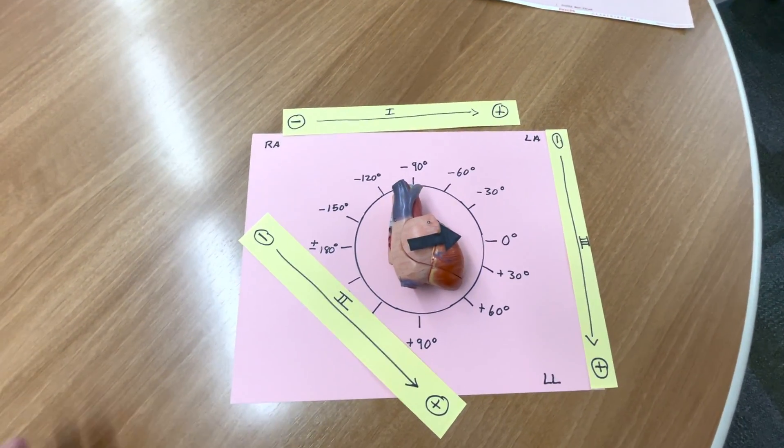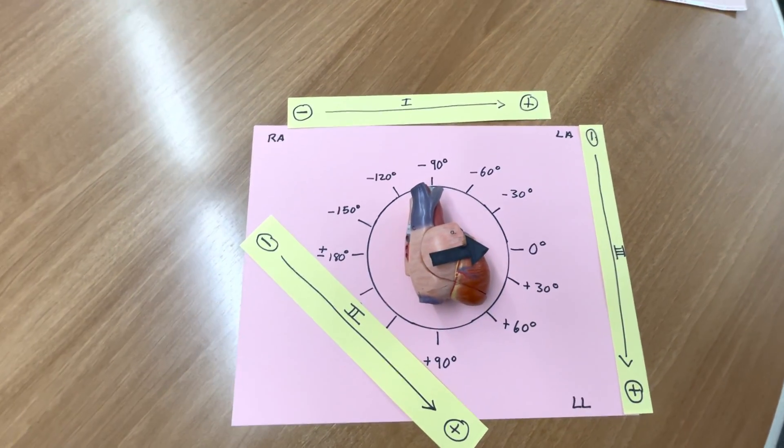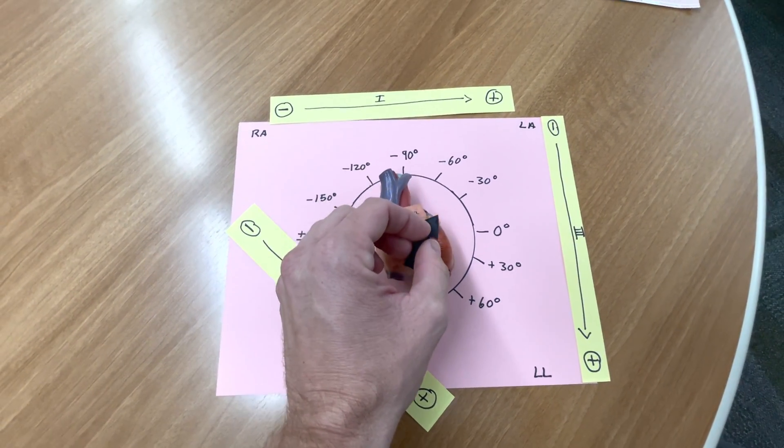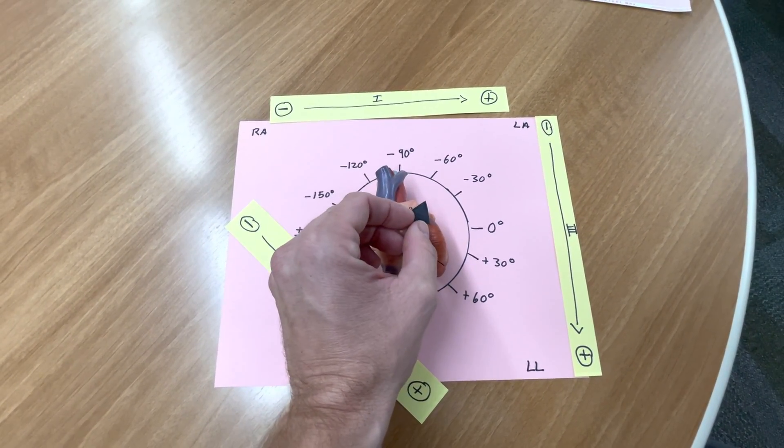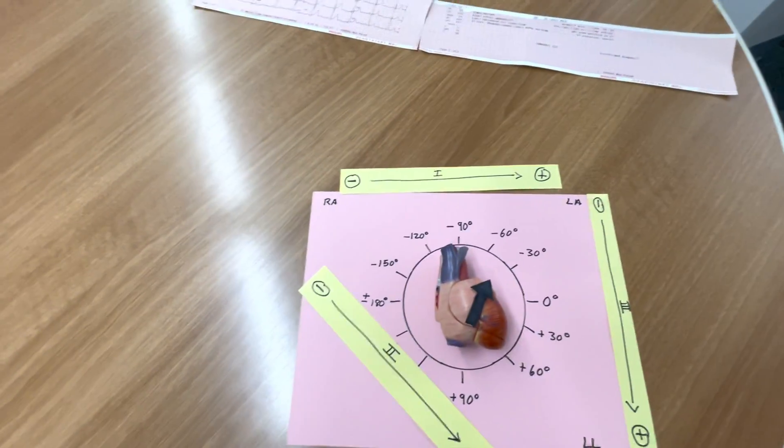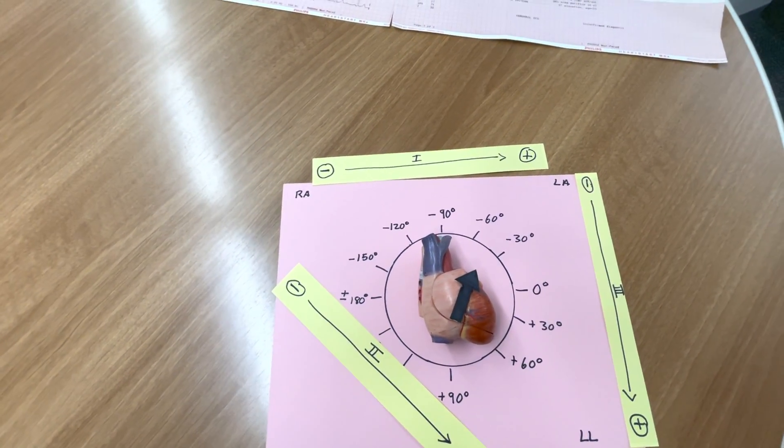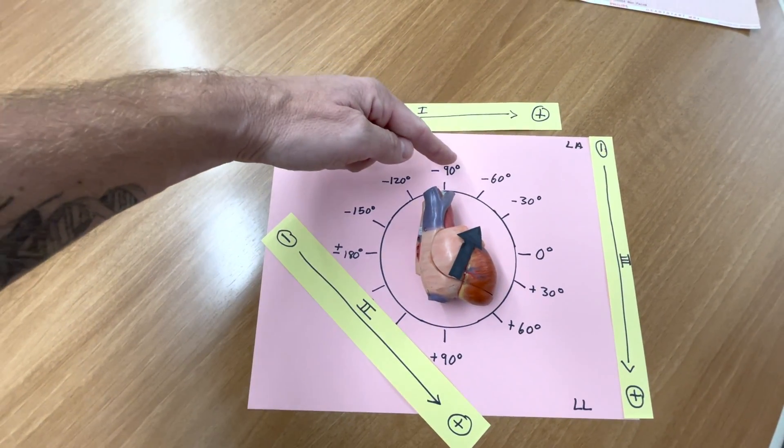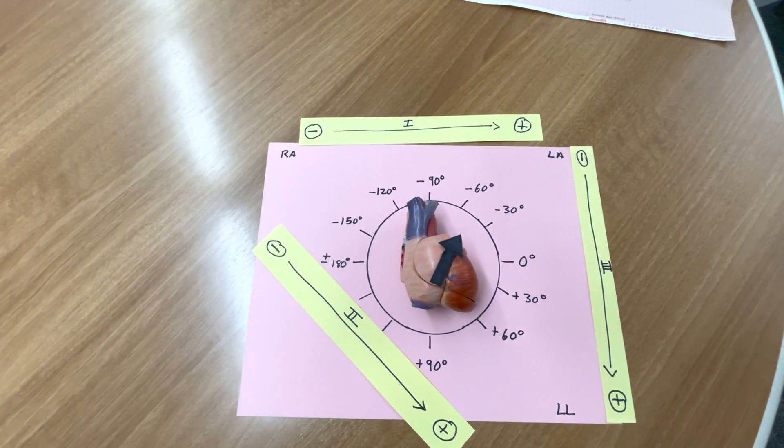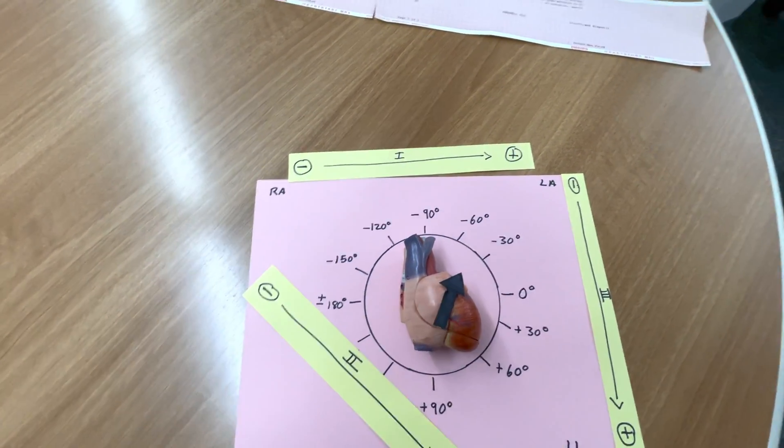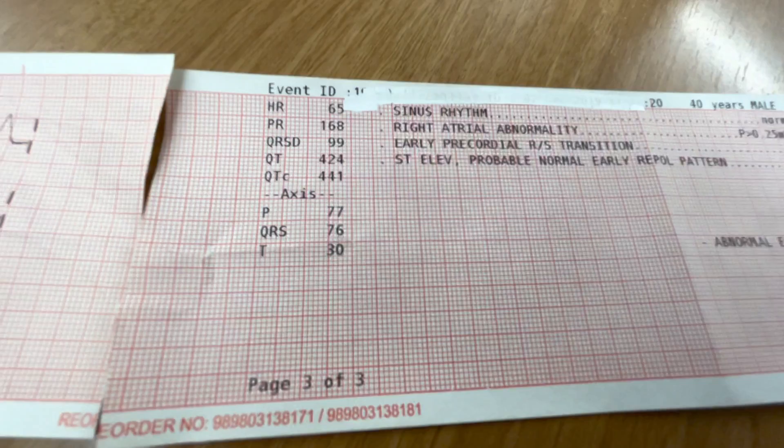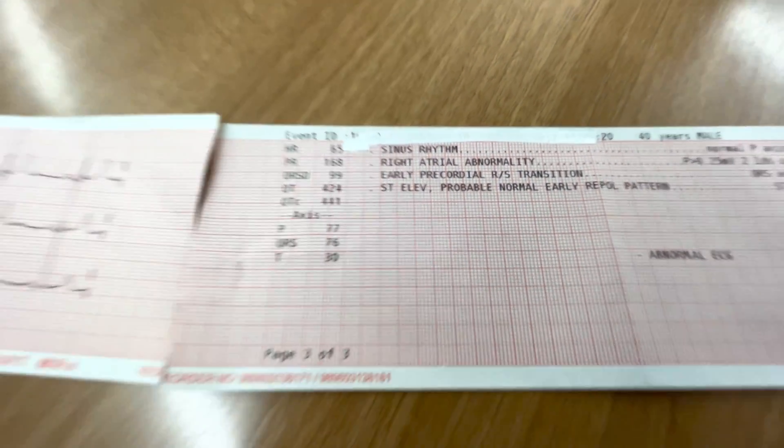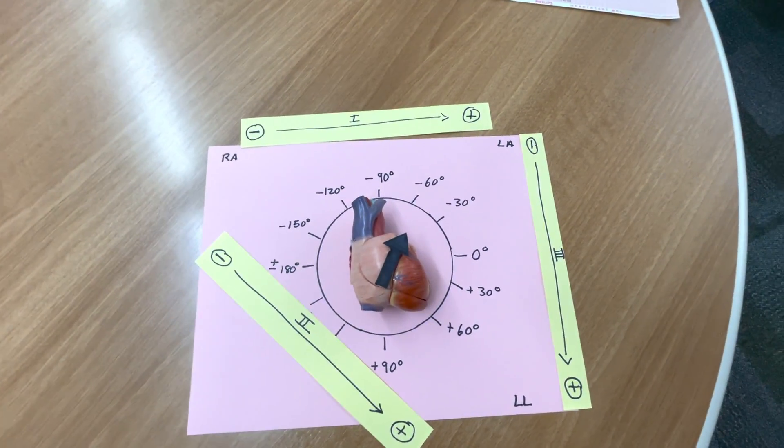From negative 30 to plus 90 is generally considered normal. 0 to negative 30 is physiological left axis deviation. Now, when that goes above and you have something that looks like this from negative 30 to negative 90 degrees here, that is what we call pathological left axis deviation. So, you go to your 12 lead, you look, and if that QRS or that Q axis is between negative 30 and negative 90 degrees, that patient has pathological left axis deviation.